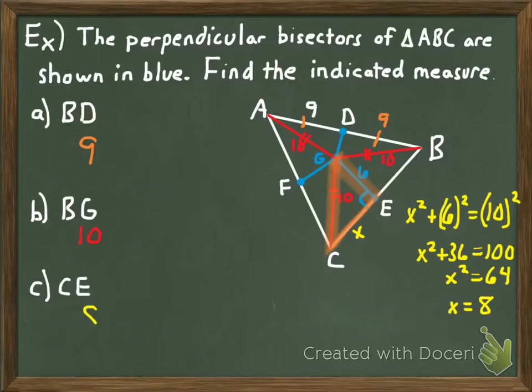So you know what a perpendicular bisector of a triangle is. You know that the three perpendicular bisectors are concurrent and they intersect at what's called the circumcenter. And you know the circumcenter of the triangle is equidistant from the vertices of the triangle. Thanks for watching, guys — I'll see you next time.